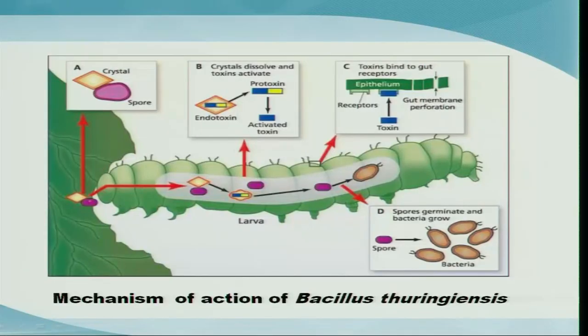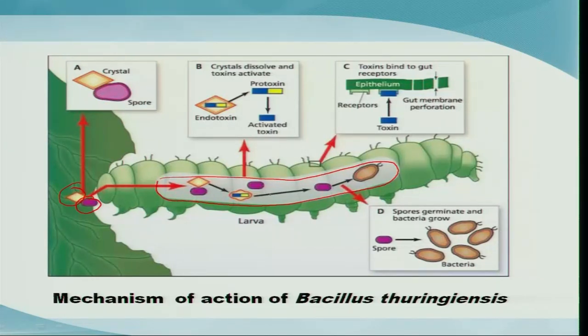Let us look at the mode of action of Bacillus thuringiensis. Bt produces crystalliferous toxin in the spore, and the spore also contains a crystal body with the toxin. When an insect feeds on this, it enters the midgut region where, due to the alkaline nature of the insect midgut, the endotoxin is released. This toxin binds with the epithelial cells of the midgut.